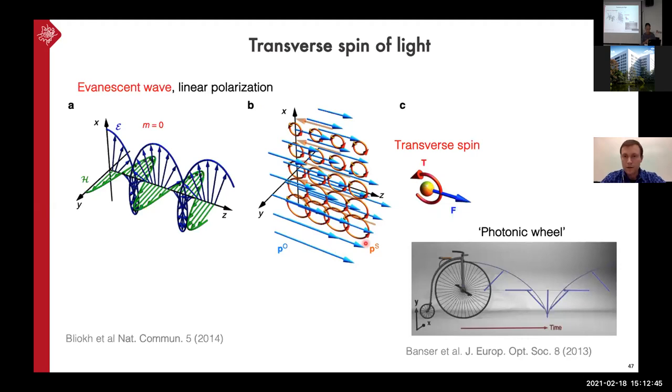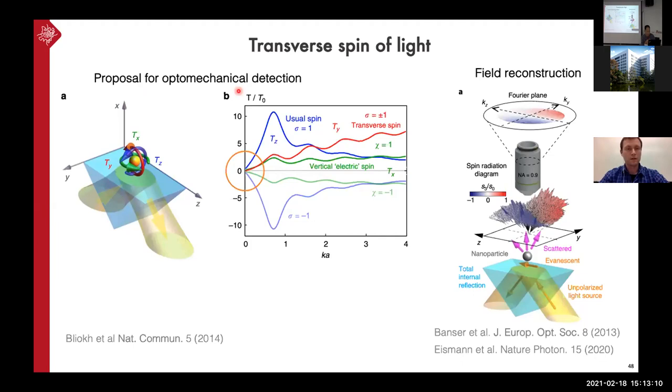All right. And this is similar to the rotation of the bicycle wheel, which is creating this transverse moment of inertia. And it was called the photonic wheel by the scientists who published this. And they were one of the first ones in the field. And there is a proposal for the optomechanical detection of this transverse spin through torques exerted on the metallic particle. So this is gold nanoparticle near the glass prism where we have the total internal reflection and this creates the evanescent field and they should be all three components of the spin. So longitudinal and both transverse components. And another proposal for detection of this is through the field reconstruction. And this has been done by scanning a small nanoparticle through the field and detecting the far field scattering.